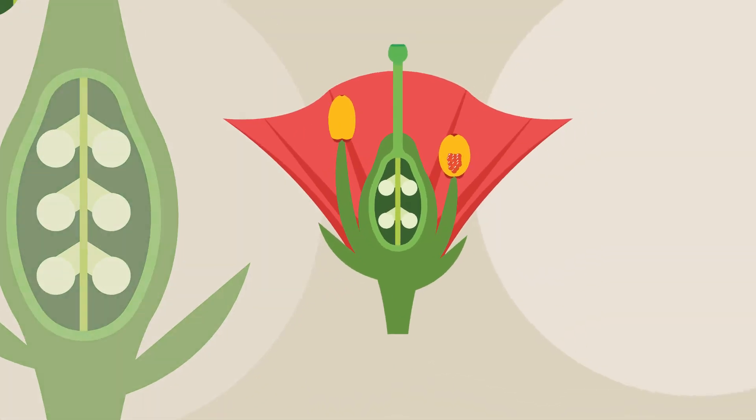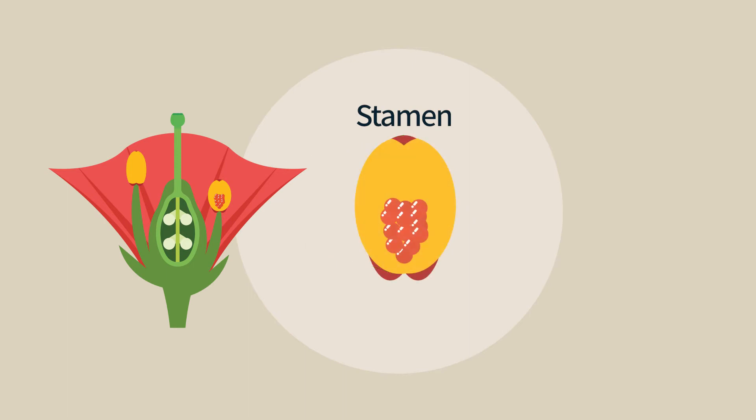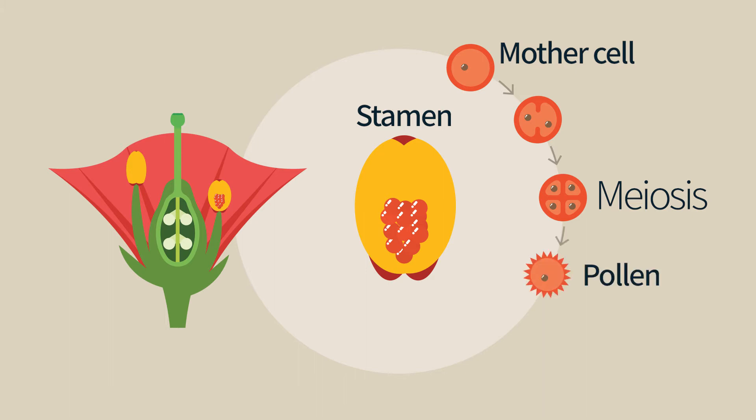Before talking about fertilization, let us describe the male part. Meiosis that gives rise to four haploid cells is here the first stage. Each of these four cells will develop into a pollen grain.